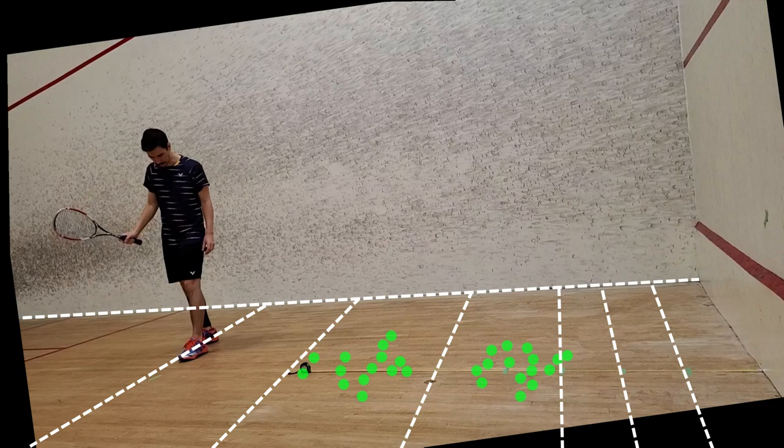With the topspin drop, on average, my shots landed about 20cm further back in the court. An interesting thing to note here is the distance between the first and second bounce was much shorter. Kind of cool to see.